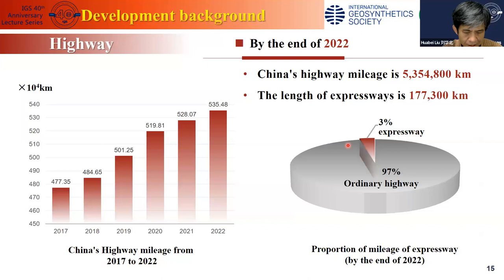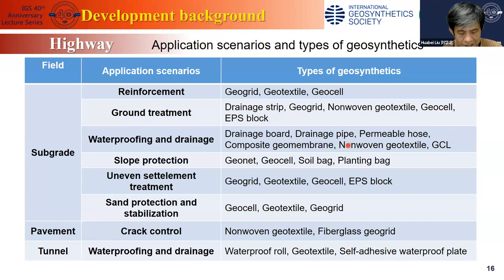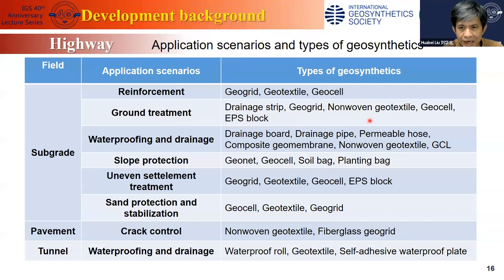For highway, by the end of 2022, China's highway mileage was more than 5 million kilometers, of which around 177,000 kilometers were expressway. Geosynthetics are used in different components of the highway including subgrade, pavement, and tunnel, with application scenarios from reinforcement and ground treatment all the way to crack control. Almost all types of geosynthetics are used in the highway industry.